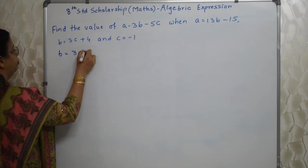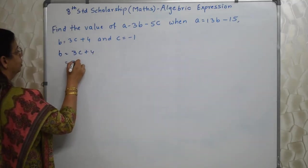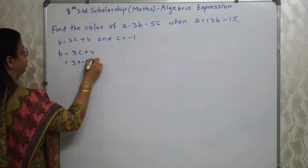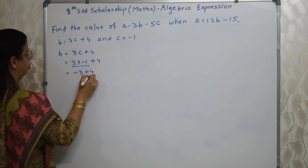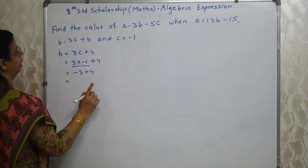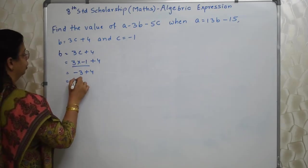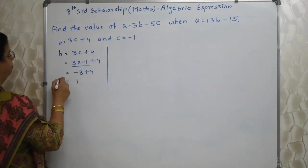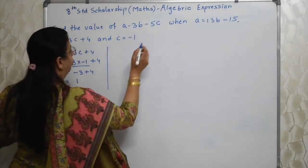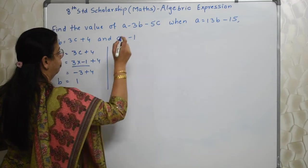b is equal to 3c plus 4. So this is 3 into minus 1 plus 4. BODMAS here. So minus 3 plus 4. Here please be careful with the signs. So it is plus 1 here. Now with the help of b, now b is there, we can find out a because a is given in terms of b.